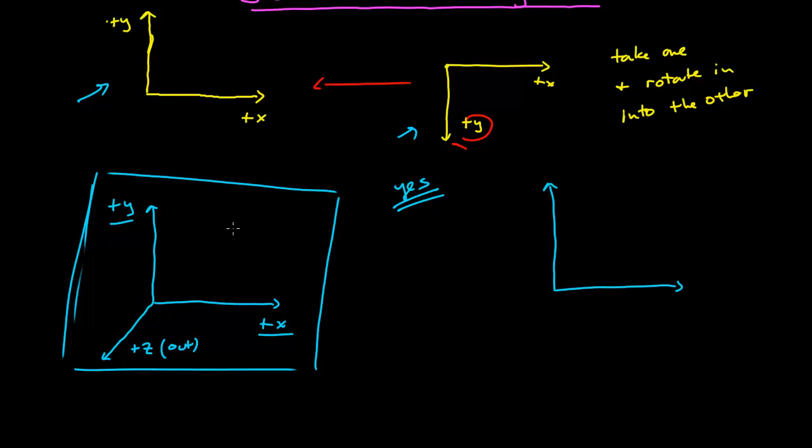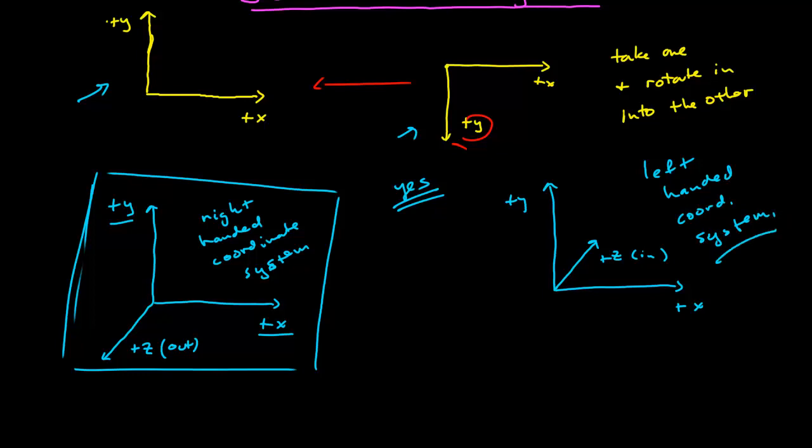This is called a right-handed coordinate system. So, if you had chosen positive z into the screen, this is a left-handed coordinate system. So, first, let's decide how we can tell the difference.